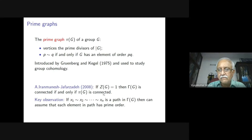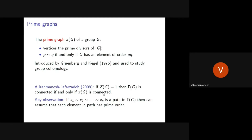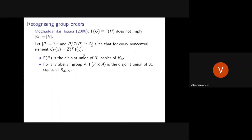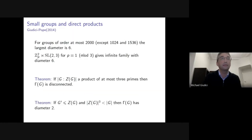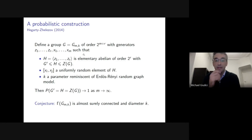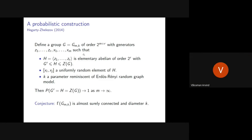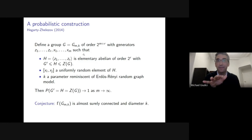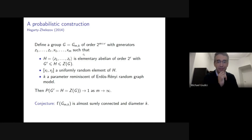A final question concerned the random group construction G(m, k): k is just a free parameter, independent of r, and the conjecture is that the commuting graphs of G(m, k) are almost surely connected with diameter k as m → ∞ — analogous to how the Erdős–Rényi random graph model works.